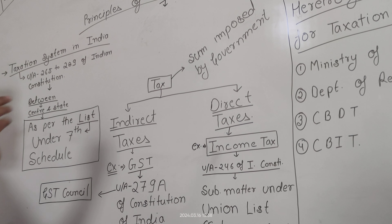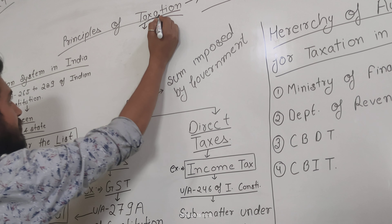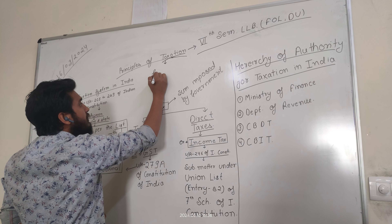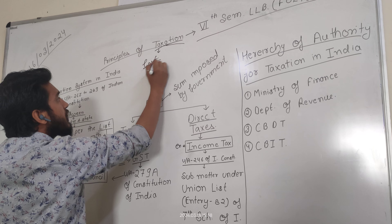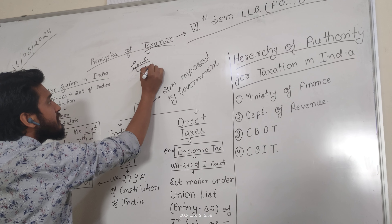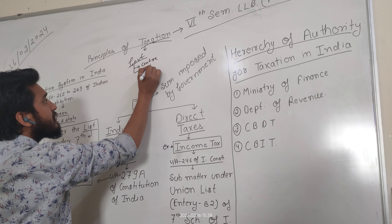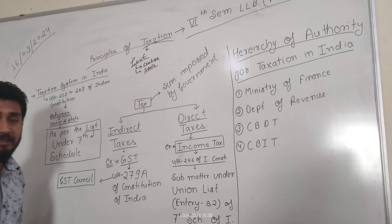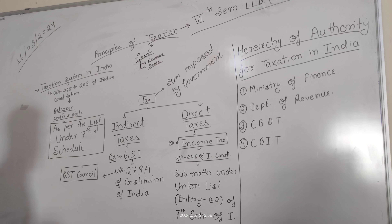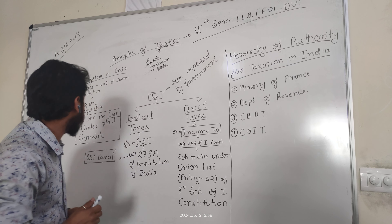The Taxation system states that the Government can impose and collect taxes. So what is 'Government'? Government will be the Central Government or the State Government. There are two Governments in our parliamentary system. As we know, India has a parliamentary system with the Central Government and the State Government.